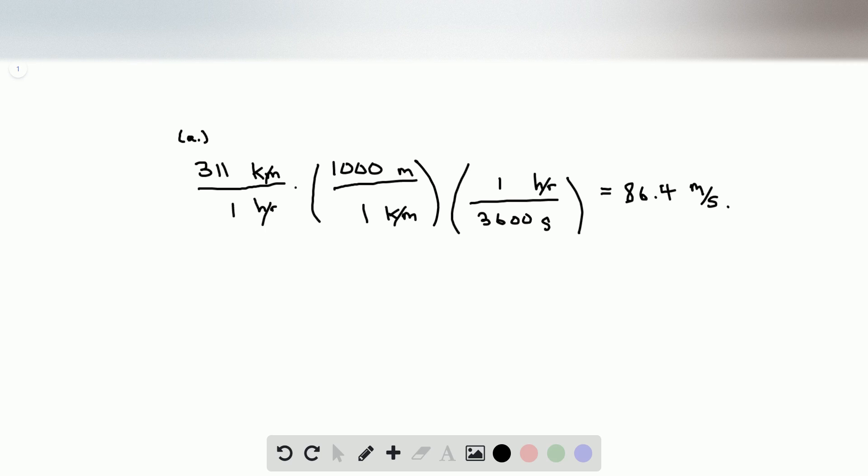Now, in order to determine the acceleration, let's write down our numbers. Our y minus y naught, the distance traveled during the deceleration, is negative 0.81. Our initial velocity is negative 86.4 meters per second. Our final velocity is going to be 0, because it comes to a rest.